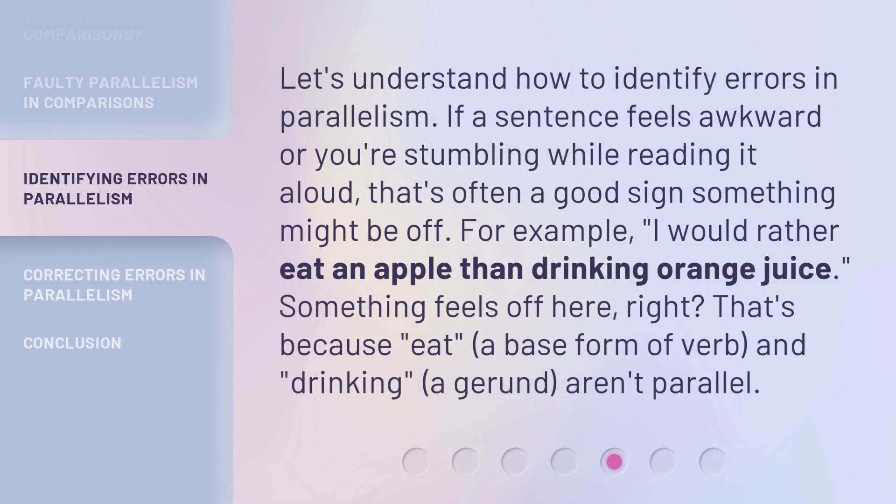Let's understand how to identify errors in parallelism. If a sentence feels awkward or you're stumbling while reading it aloud, that's often a good sign something might be off. For example, 'I would rather eat an apple than drinking orange juice.' Something feels off here, right? That's because 'eat,' a base form of the verb, and 'drinking,' a gerund, aren't parallel.